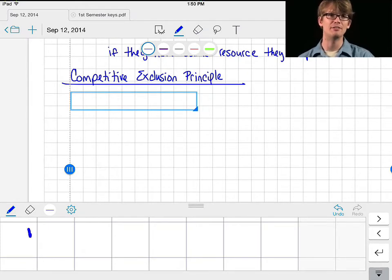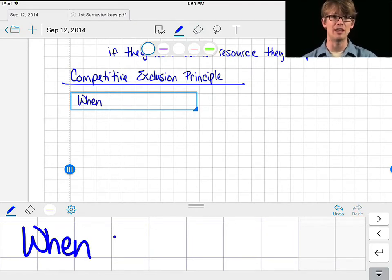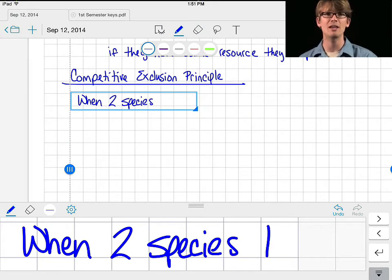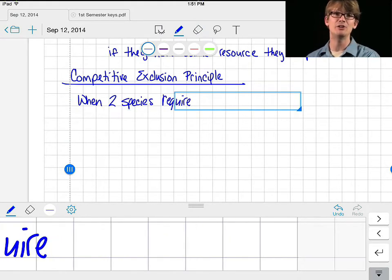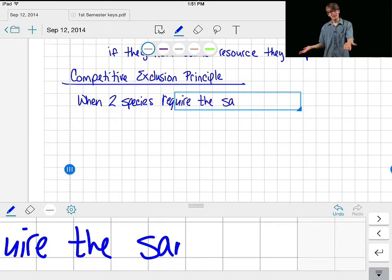Paramecium aurelia gained a competitive advantage because its population grew slightly faster than P. caudatum's. So Goss's experiment showed that, in the absence of another disturbance, two species that require the same resources cannot live indefinitely in the same habitat. The inferior competitor will be eliminated. Makes sense.